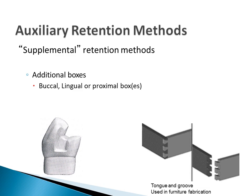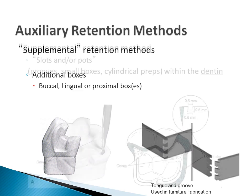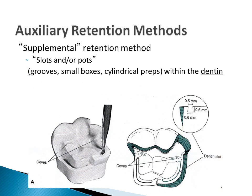Since vertical walls supply retention, an additional box can be placed on the buccal or lingual. Similar to tongue and groove furniture, the box allows for an interlocking of the materials. Slots and pots are essentially grooves, small boxes, and/or cylindrically shaped areas.